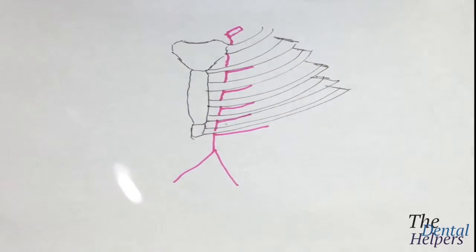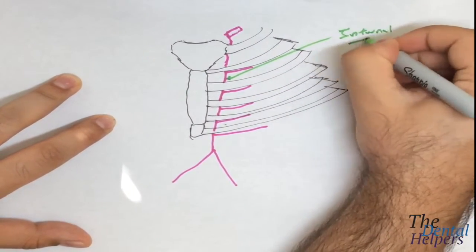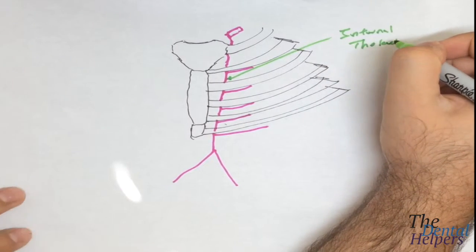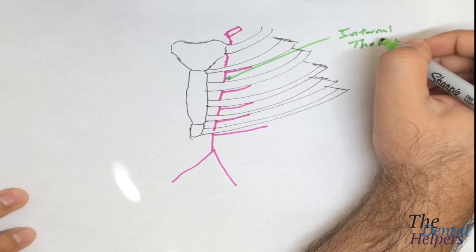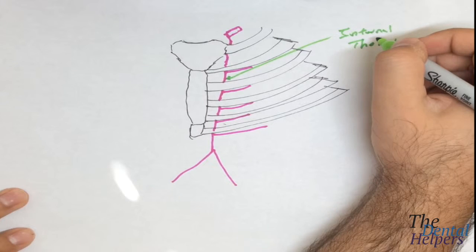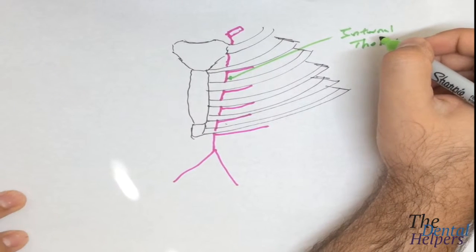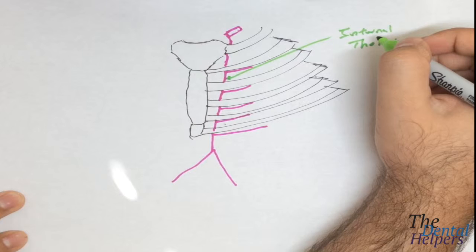The internal thoracic is internal to the thoracic cavity — it's this long artery going down. It feeds into the anterior intercostal, the pericardiophrenic artery, the musculophrenic artery, and the superior epigastric arteries. The anterior intercostal artery runs in the intercostal space and anastomoses with the posterior intercostal arteries at the midclavicular line.